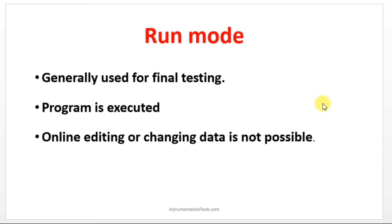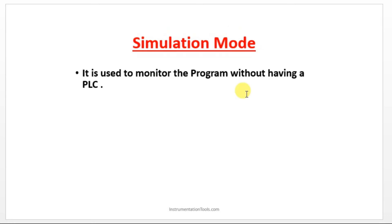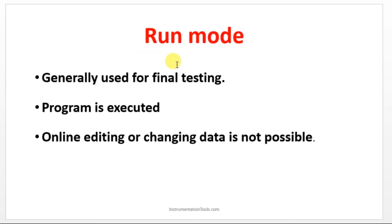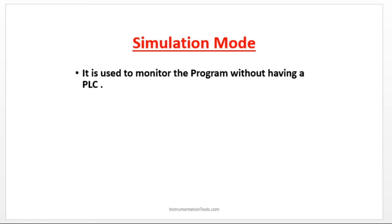In the Run Mode, once you have done the program and compiled it, you can see the output. If you are using the simulation version, we have one more mode which is called Simulation Mode. Without having a PLC, if you want to check the logic, you can use the simulation mode. In this simulation mode, if your PLC is in Run condition, you can force your input to see the status of output. This online editing is possible in the Run Mode, but before that it has to be in the simulation mode. I will show you this once we are entering into the exact programming.